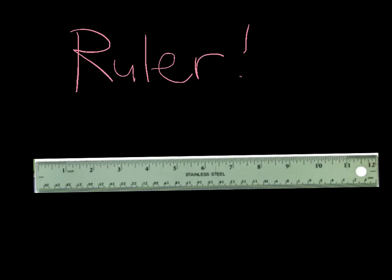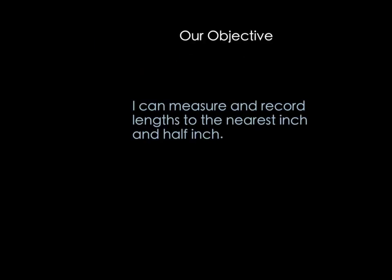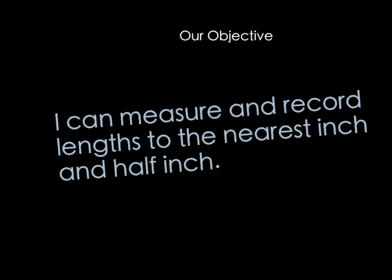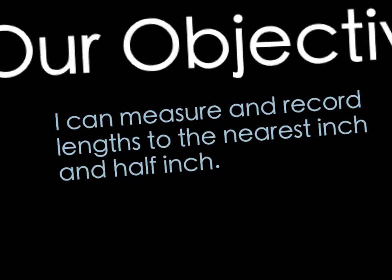And make sure that you line up the bottom of your object with where the ruler line starts right here. It's not always on the bottom of your ruler. Sometimes there's a little bit of space between the zero and the beginning of the ruler. So look at that carefully when you're measuring. Now you know how to measure and record lengths to the nearest inch and half inch so you've successfully met our objective.